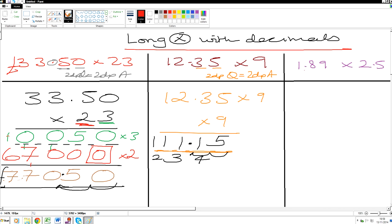Let's count the number of decimal places. 1, 2, 3. 2 decimal places here and 1 there. So we have 3 decimal places totally in our question. So we will therefore have 3 decimal places in our answer. Let's set it out. It's 1.89 times by 2.5. Here we go.